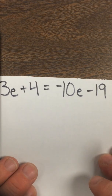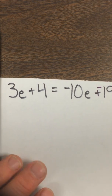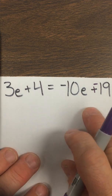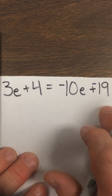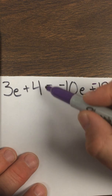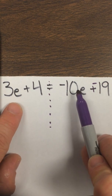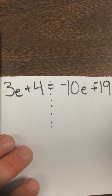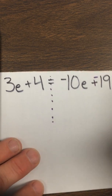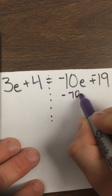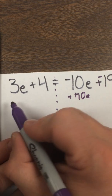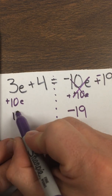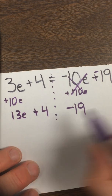Number 28 says 3e plus 4 equals negative 10e minus 19. Leave change opposite — that just gets our negatives where they're supposed to be. Now I have variables on both sides. I can look for distributive property — there is none. I can look for combining like terms — these don't match, these don't match. The like terms are on opposite sides of the equal sign. I can't just put these together because they're on opposite sides. So no distributive property, can't combine like terms. There are variables on both sides, so I'm going to subtract one set — I'll subtract negative 10e, which of course is the same as adding 10e. Do it to both sides — these cancel out, and you're left with 13e plus 4 equals negative 19.